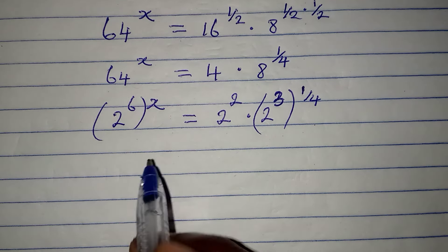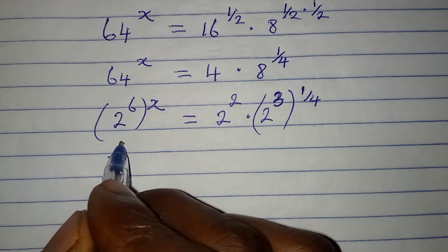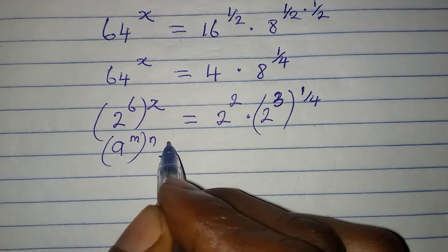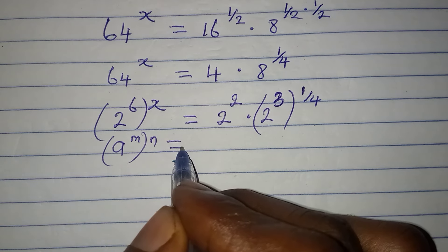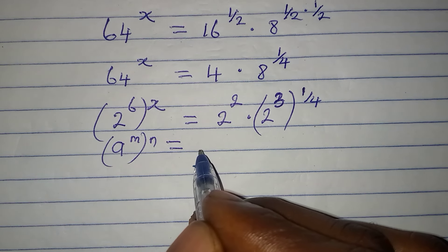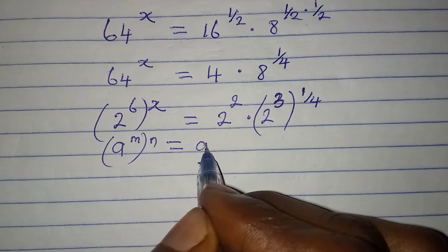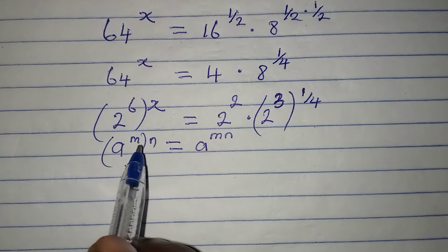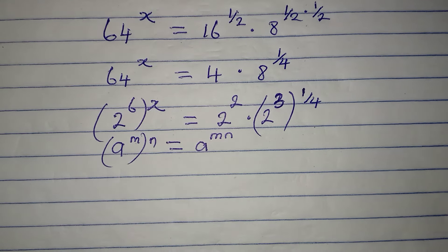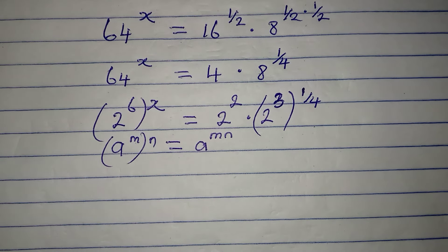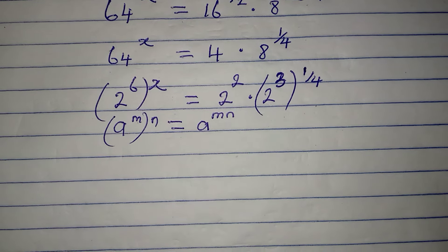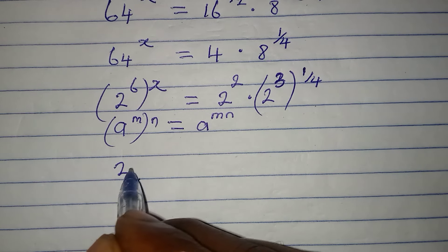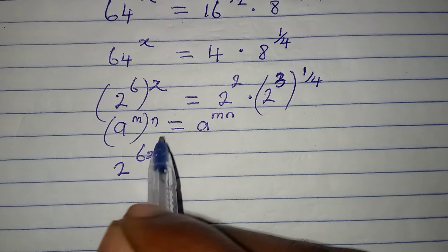Remember the law that says if you have a to the power of m to the power of n, you can turn it around so that you have a to the power of m times n — meaning you multiply the powers. Applying this principle, I'm going to have 2 to the power of 6x, since I will have to multiply the powers.